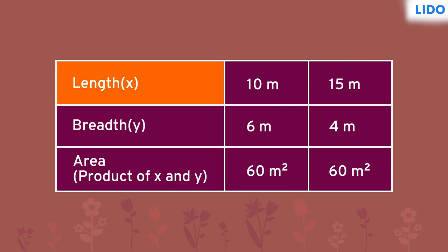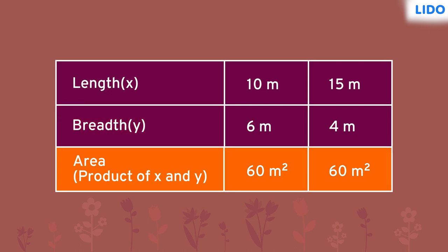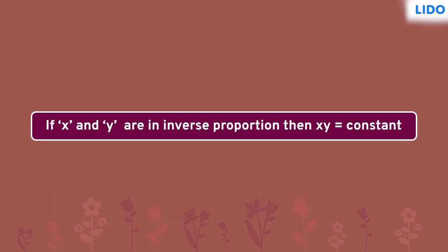Here, if x represents length and y represents breadth, then the product of x and y is the same, i.e. 60, because the area of both the gardens is equal. Thus, we can say that if two quantities x and y vary inversely, then x times y is constant for all its values, and vice versa.